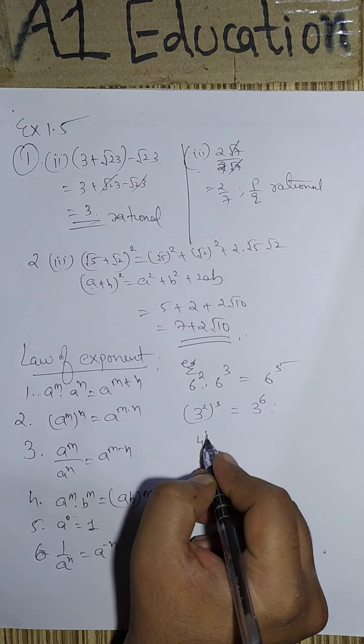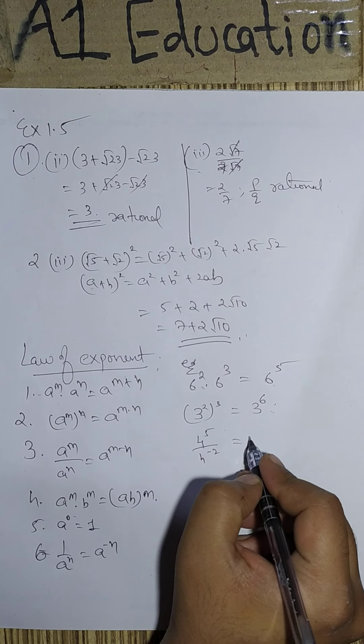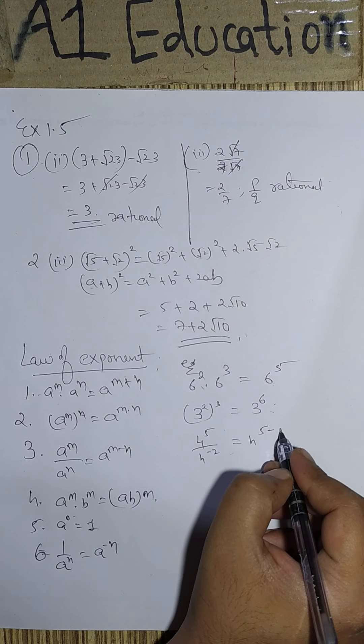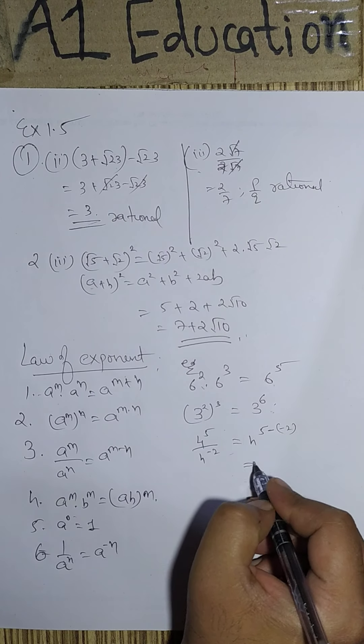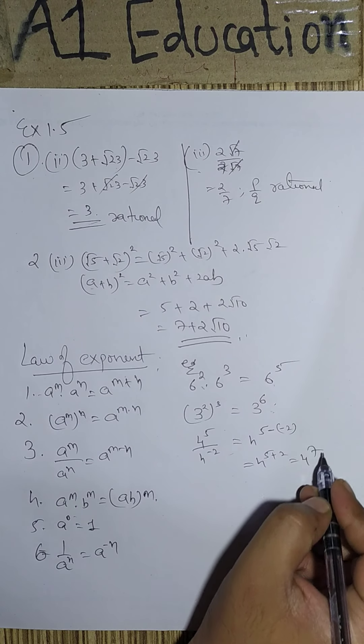Then 4 to the power 5 upon 4 to the power minus 2. This can be 4 to the power 5. And when denominator goes to the numerator, it becomes negative. So negative of minus 2. So 4 to the power 5 plus 2 and this becomes 4 to the power 7.